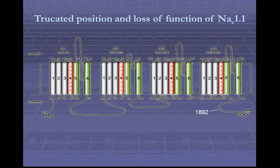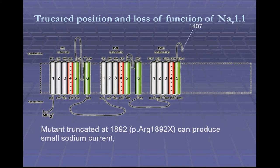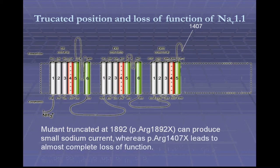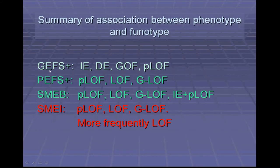Truncating mutations occurring at the C-terminal may produce small sodium current, whereas those located in the proximal part may cause complete loss of function. Regarding functional alteration and phenotype correlation, it is demonstrated that mild phenotypes, like GEFS+, are associated with mild function defects, whereas severe phenotypes, like SMEI, are more frequently associated with complete loss of function.